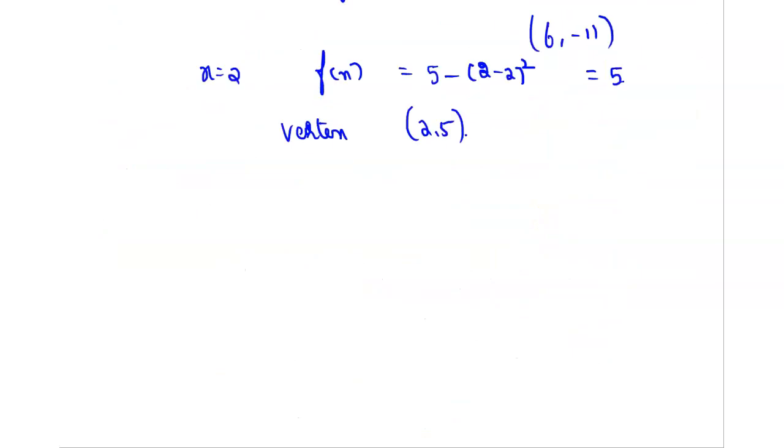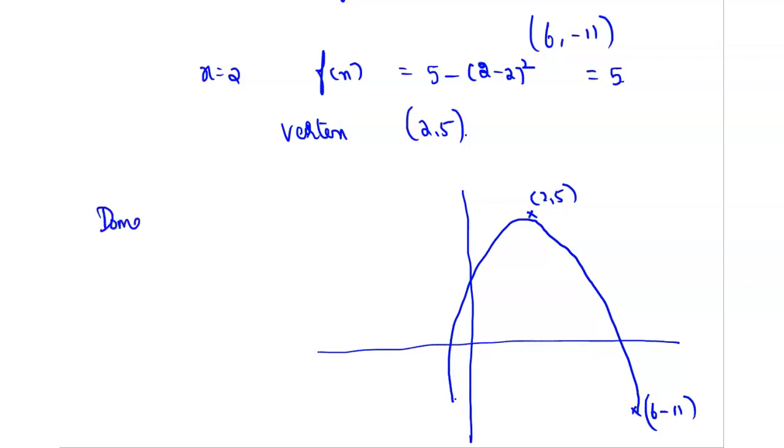Now we will plot the graph. (2, 5) will be here and (6, -11) will be here. It is given the inverse exists, therefore this will be a parabola. It is a quadratic function, so we get a graph as a parabola. The domain of f is 2 ≤ x ≤ 6 because the value of x ranges from 2 to 6, and the range of f is -11 ≤ f(x) ≤ 5.